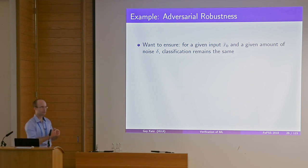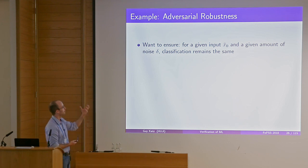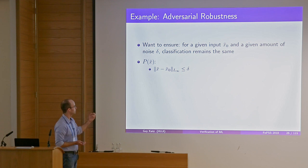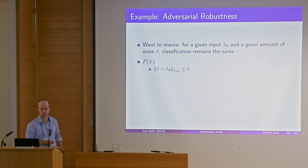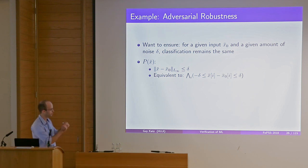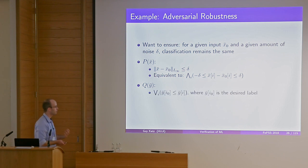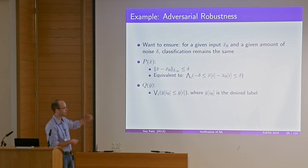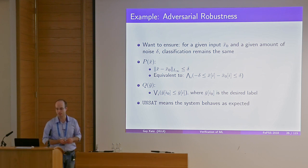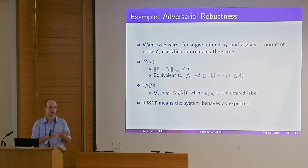Adversarial robustness can also be cast as a verification problem. For a given input x₀ (our panda) and a given noise amount delta, we want to ensure the classification remains the same. The input property focuses on inputs close to x₀ — specifically, using the L∞ distance metric, inputs that are at most delta apart from x₀ on each coordinate. The output property checks whether one of the other labels gets a higher score. Unsat means the property holds; sat means it doesn't. Many interesting questions can be cast as verification questions this way.